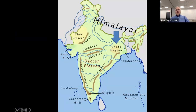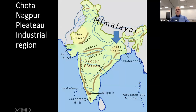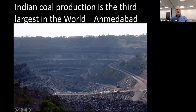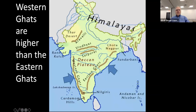The Chota Nagpur area, right in this region, is a plateau of industrial development. That's where the limestone, mica, bauxite, copper, iron, and coal happen to be. Here's one of the big coal production areas — the largest in the world at Ahmedabad. Looking at the Western Ghats and the Eastern Ghats: these are higher and will catch more rain when the summer monsoons come along.